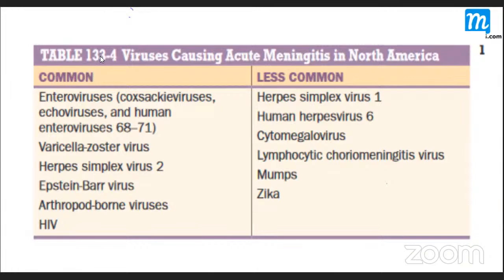This table shows causes of acute meningitis in North America — there is some difference from our setting but it is broadly similar. Enteroviruses are the commonest causes of viral meningitis, followed by arboviruses, then herpes simplex virus, mumps, and HIV.